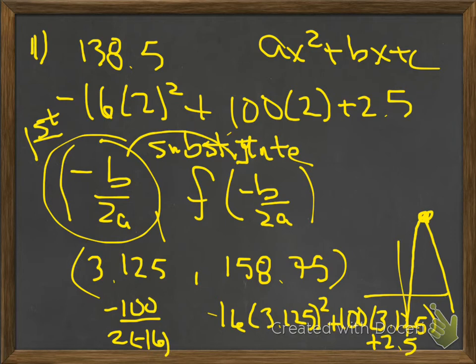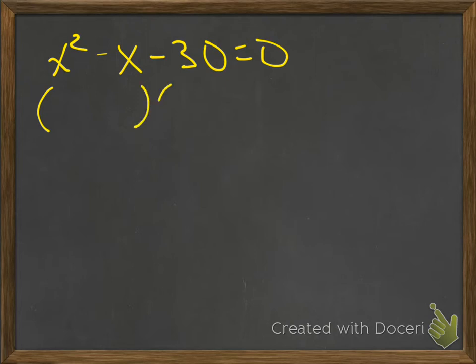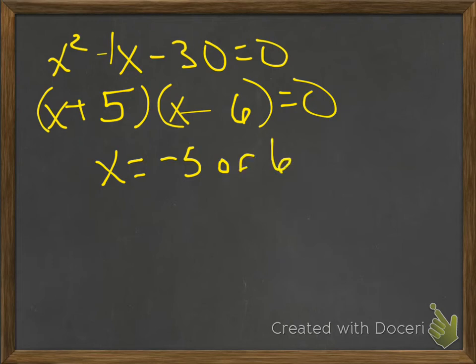Number 13 — when will it hit the ground? Find the zeros. Graph it on the calculator and find the zeros. Your answer should be about 6.3. Number 14: x squared minus x minus 30 equals 0. Minus minus means plus and minus in parentheses. Two numbers that multiply to give 30 and subtract to give 1: 5 and 6. When solving, think opposite of parentheses — so the answer is negative 5 or positive 6.